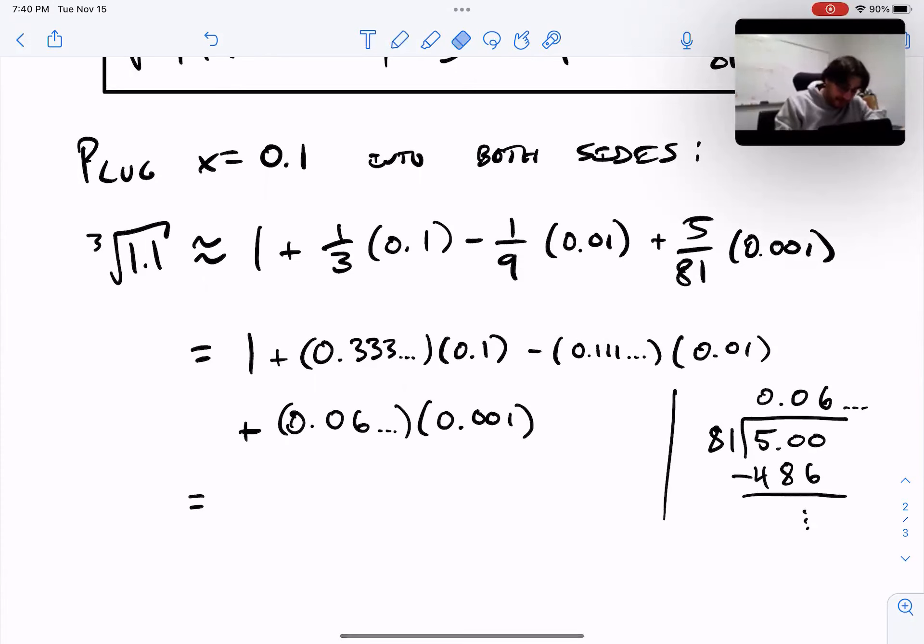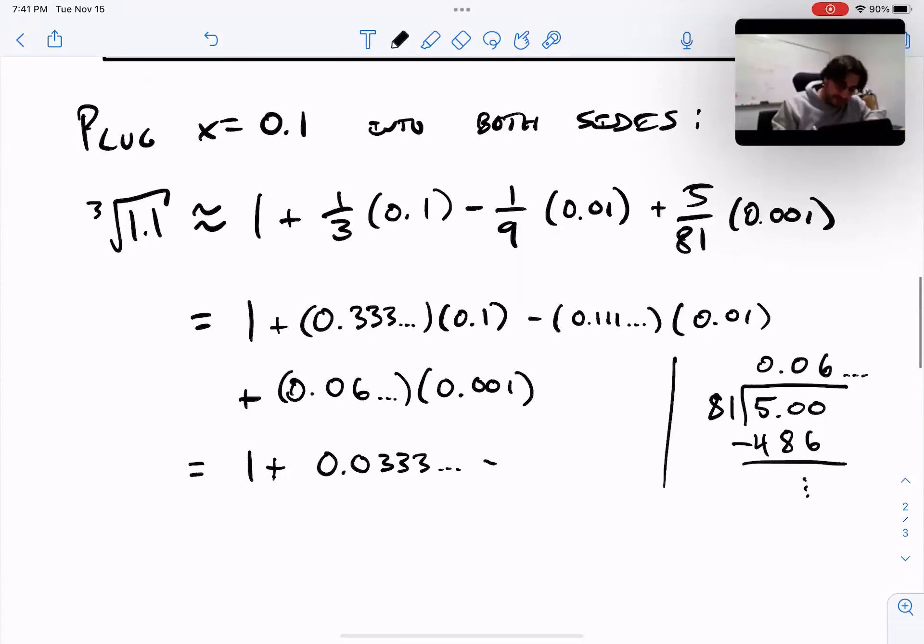Now I can write all this out. So I have 1 + 0.0333... and then I have -0.00111... and then here I have +0.00006. Because this says one, two, three zeros, move the decimal three zeros. There was already a zero in front of the 6, so now there should be four zeros in front of the 6.